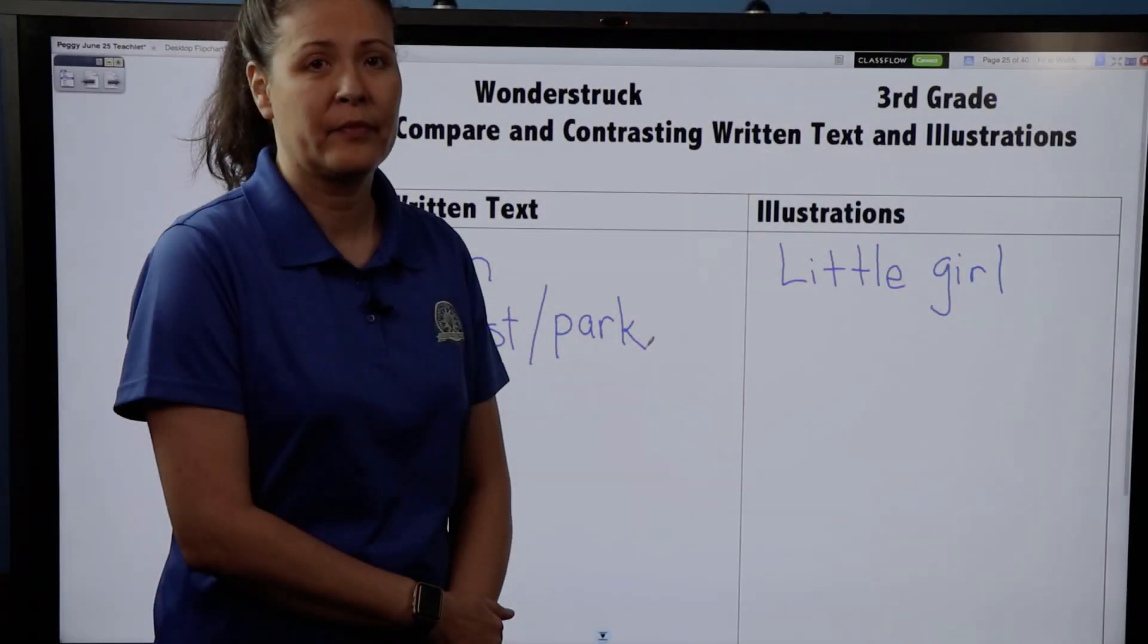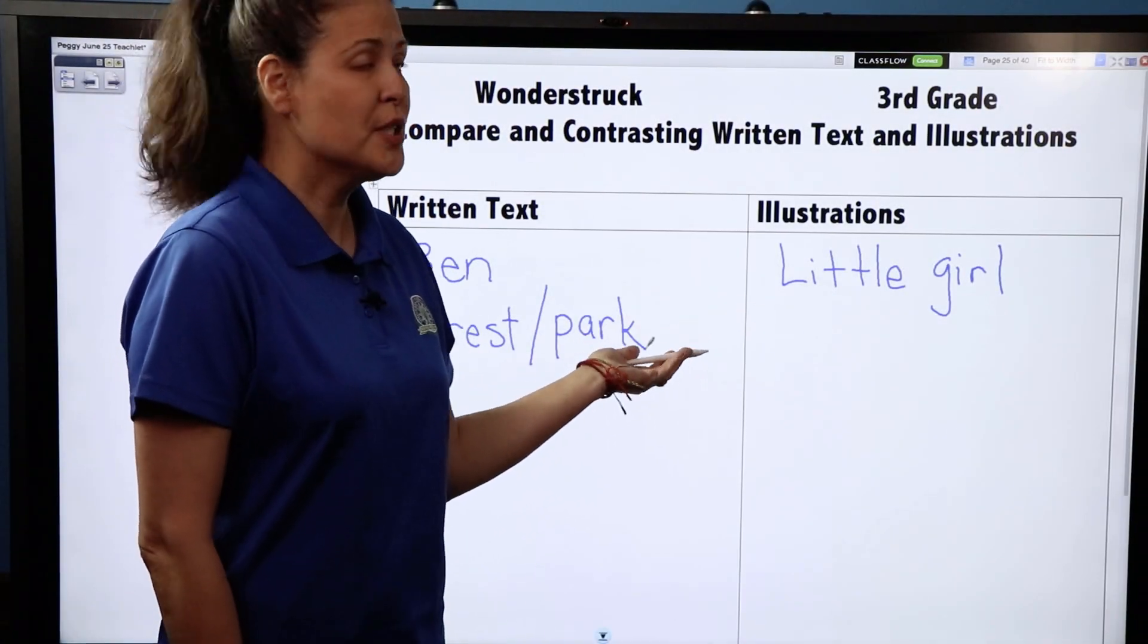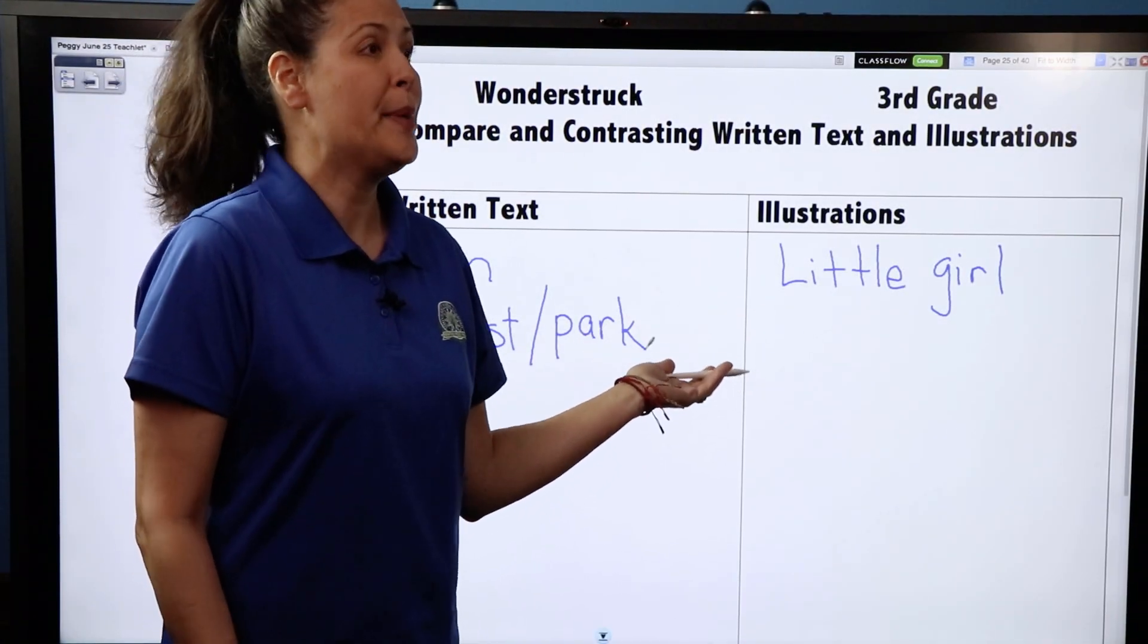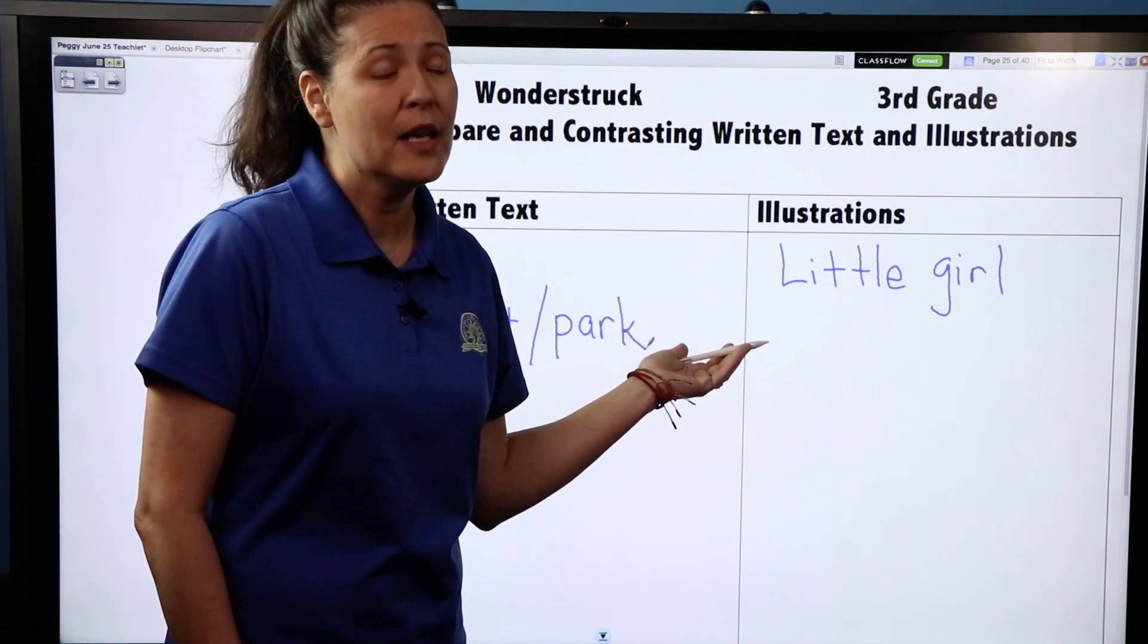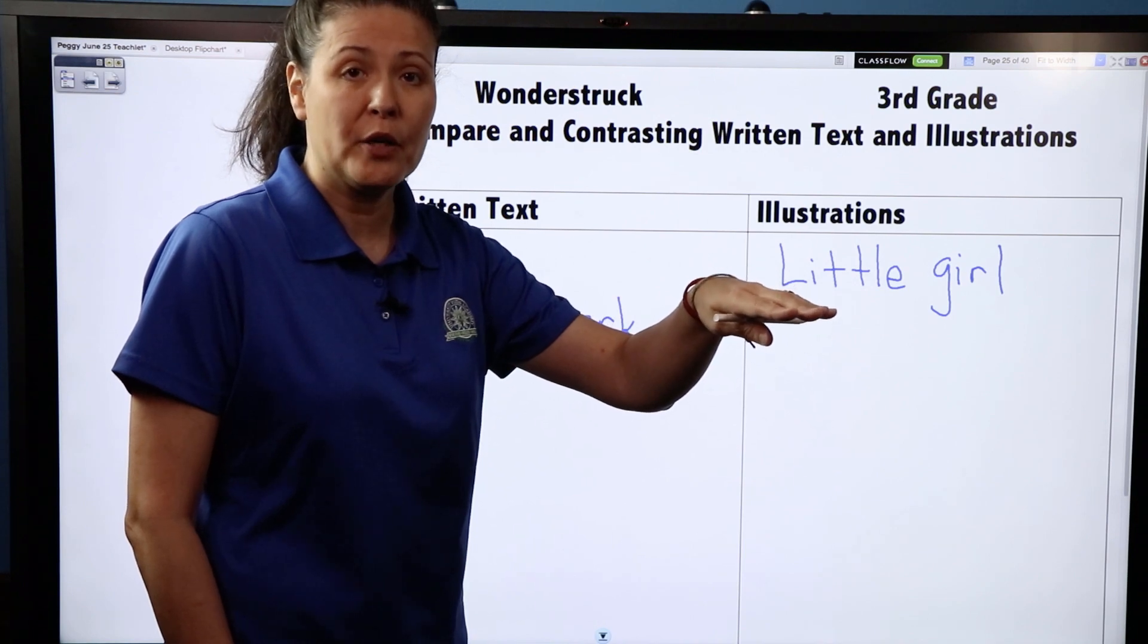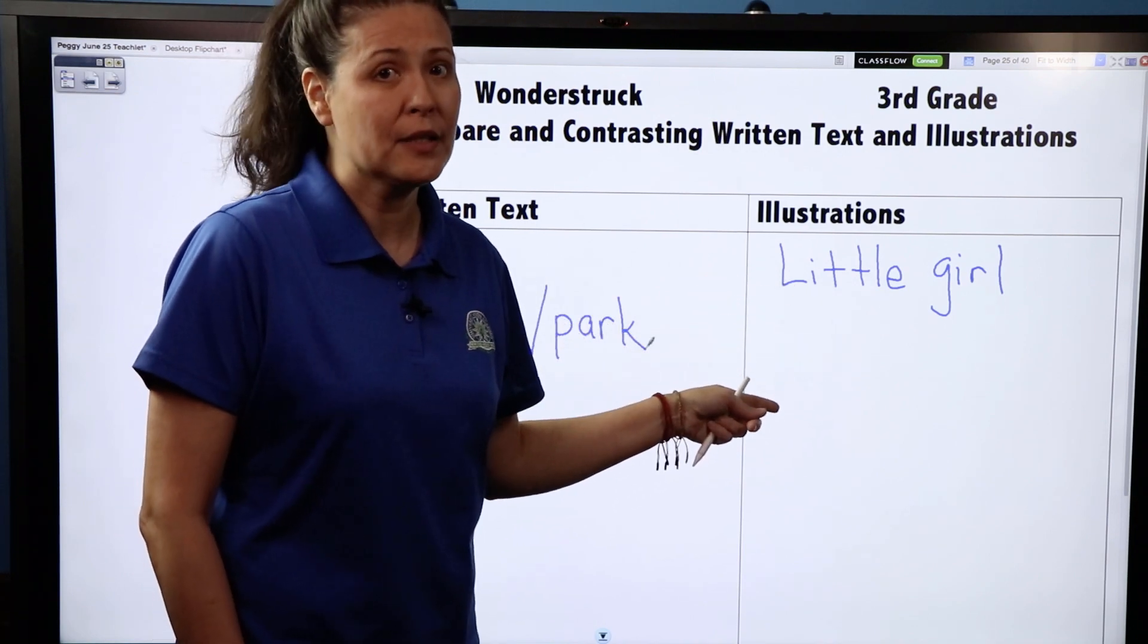Our little girl, we know that she's in Hoboken, New Jersey. Now I may not know where Hoboken is, but I sure know that there's a lot of cities, the cityscape that we saw in her picture out her window. So she's probably in a city. So let's write that down.